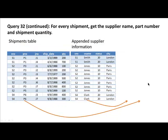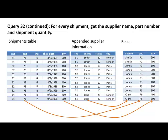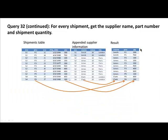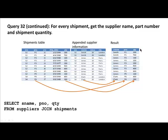Once you have the super table, you can pick out the appropriate columns — supplier name, part number, and quantity — and that's your result. To achieve this in SQL: SELECT s_name, part_number, quantity FROM suppliers JOIN shipments. We also need to indicate that we're joining on the supplier number field, so we say ON suppliers.supplier_number = shipments.supplier_number.